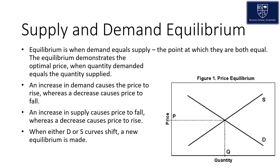Comparatively, an increase in supply causes the price to fall, whereas a decrease in supply causes the price to rise. When either the demand or supply curves shift, a new equilibrium is made.